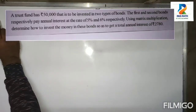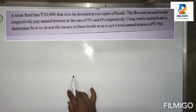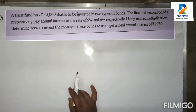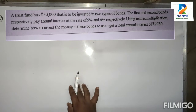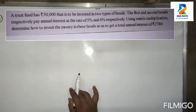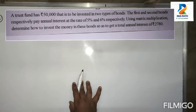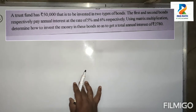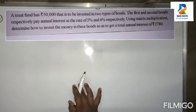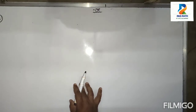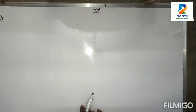Now the second question: a trust fund has 50,000 rupees that is to be invested in two types of bonds — the first and second bonds. They respectively pay annual interest at a rate of 5% and 6%. Using matrix multiplication, determine how to invest the money in these bonds so as to get a total annual interest of 2,780 rupees.